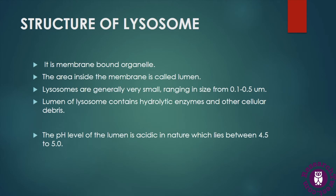Now let's understand the structure and chemical composition of lysosome. The lysosome is a membrane-bound organelle with a single membrane. Inside this single membrane, the area is called the lumen. Lysosomes are generally very small organelles ranging in size from 0.1 to 0.5 micrometers, though sometimes larger sizes exist. The lumen contains hydrolytic enzymes and many other cellular components, and the matrix contains tissue-dissolving enzymes, hydrolases, and many other acidic phosphatases.